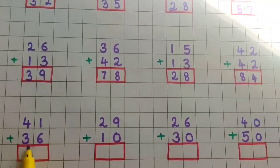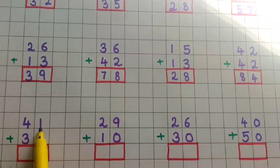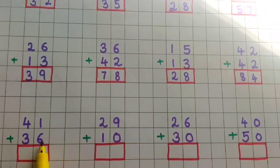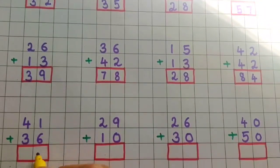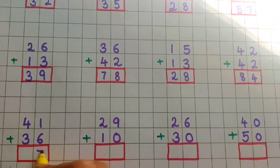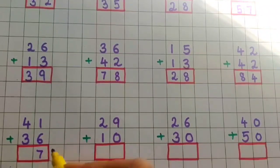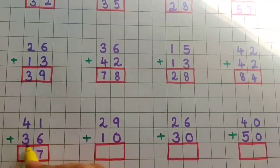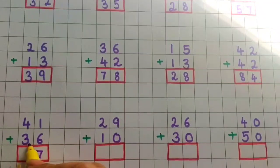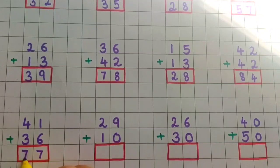Now next problem children: 41 plus 36. So 1 plus 6 is 7, so I will write here 7. And 4 plus 3 is again 7. So the answer is 77.